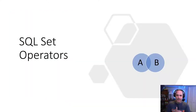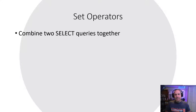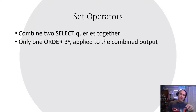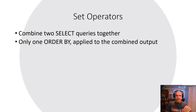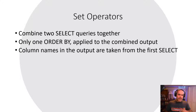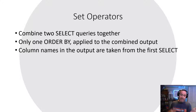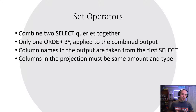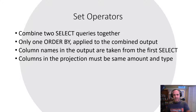So let's get started with the set operators. Set operators combine two SELECT queries together. When you do this there's only going to be one ORDER BY clause and it's going to be applied to the combined output. So you cannot sort the first SELECT query and sort the second SELECT query and then join them together with a set operator. The ORDER BY has to come in the final SELECT. The column names in the output are taken from the first SELECT. So if you have an alias for a column in the first SELECT statement, that's going to be the name of the column in the output. The intermediary SELECT statements that are combined together — those names are not adopted. The requirement for set operators is that the number of columns must be the same in each of the SELECT statements and each column needs to be the same data type.